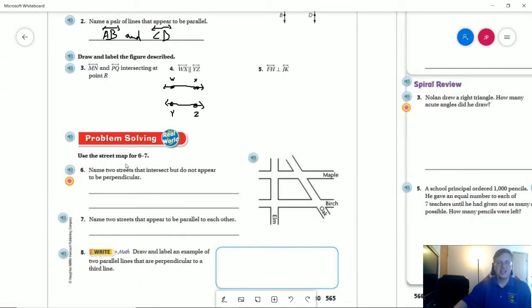Number six, name two streets that intersect but do not appear to be perpendicular. So our perpendicular ones would be Maple and Elm and Birch and Elm. And if these two things were to continue and meet each other, those could also intersect, but we're not going to count those for right now. So Oak and Elm potentially could intersect if those streets kept going, but for the moment we're going to say that they do not.